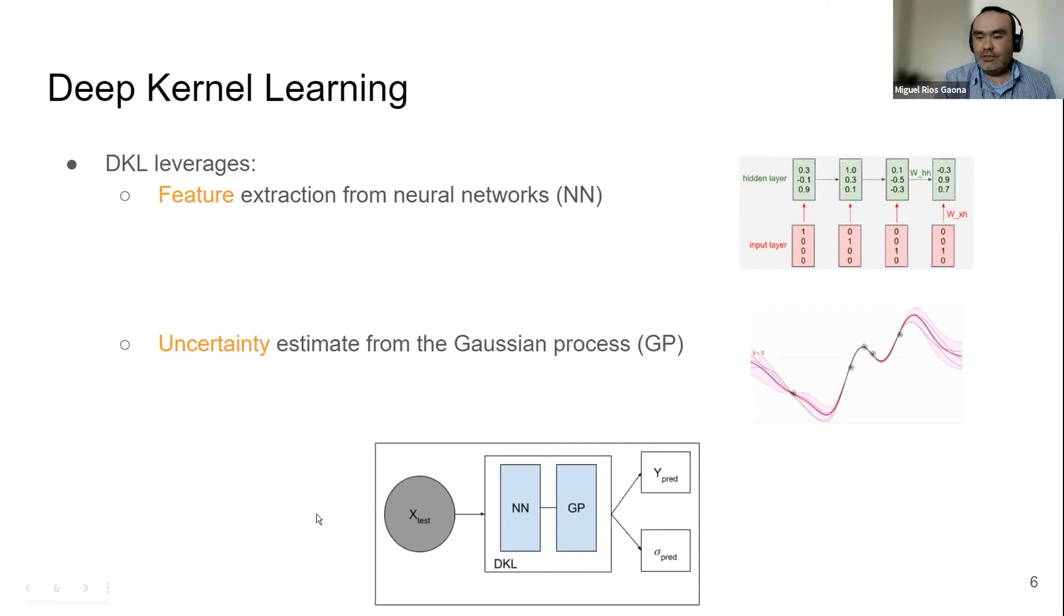And we can see this pink band as our confidence estimate of the prediction. So here, for a new instance, we can see the pipeline that the neural network is going to produce features or representations for the GP to make predictions and uncertainty.